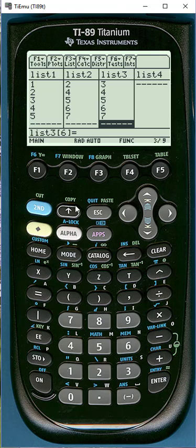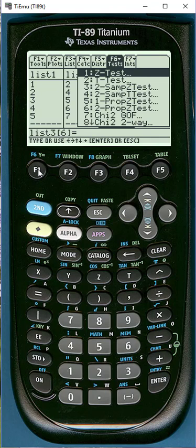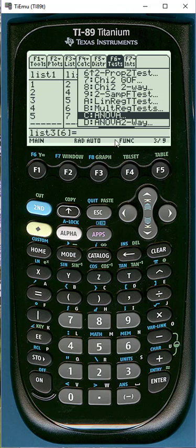Now that we have the lists entered, we'll click on second F1 which will access the F6 menu, and the up arrow is the fastest way to get us to ANOVA. Click enter.